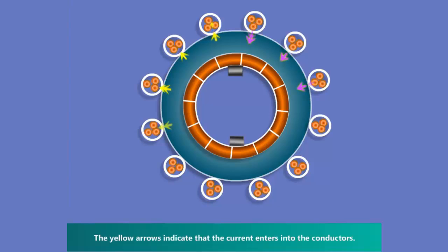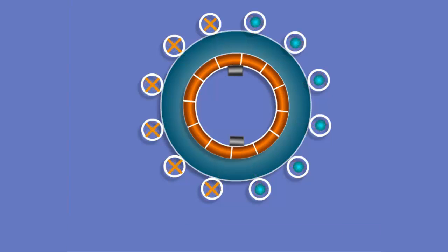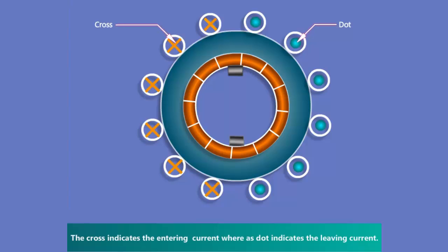The yellow arrows indicate that the current enters into the conductors. The violet arrows indicate that the current leaves from the armature conductors. The cross indicates the entering current whereas dot indicates the leaving current.